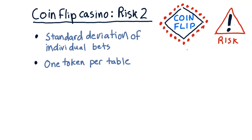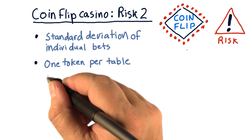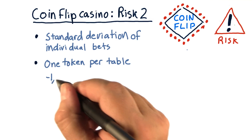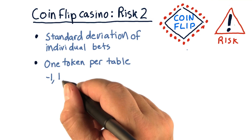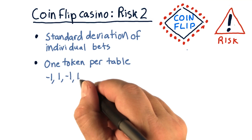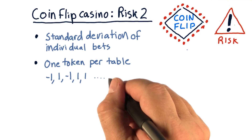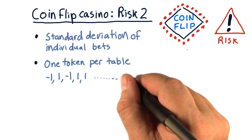So we're going to look at standard deviation after the fact. In other words, we're going to assume we bet already and we're looking at the outcome. So if we have one token per table, we might have a loss of one token on one table, a gain on another, another loss, and a gain, and a gain, and so on, all the way across our 1,000 tables.